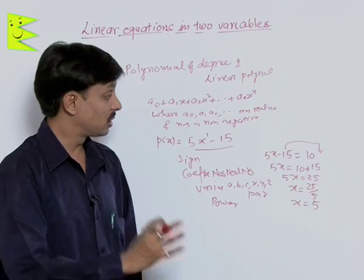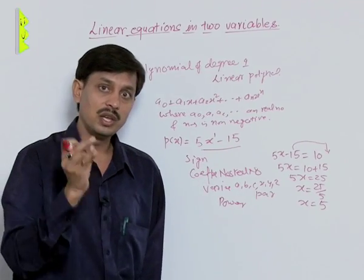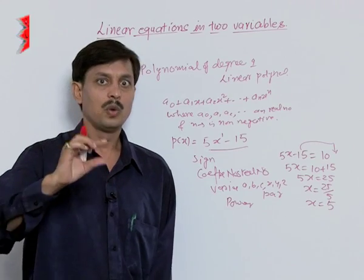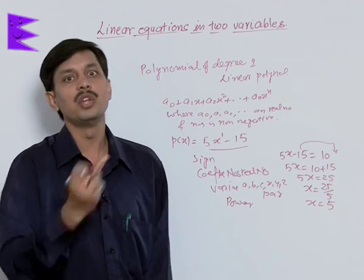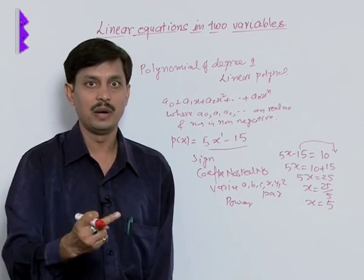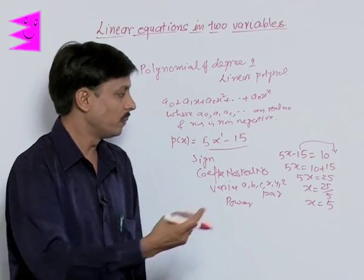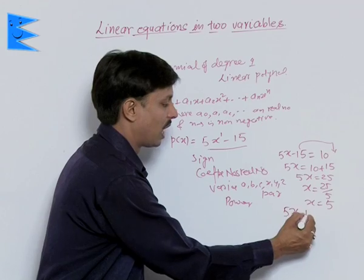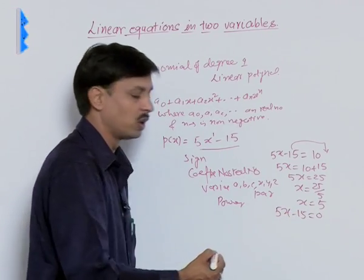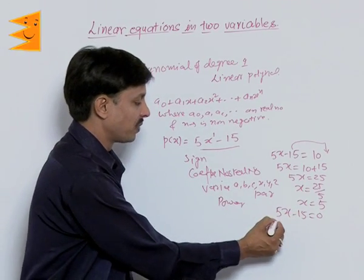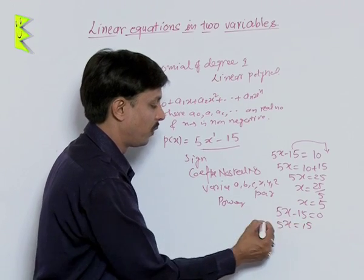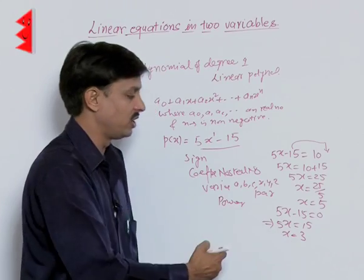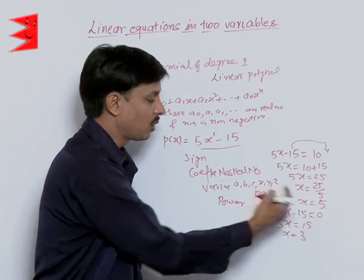So what is the linear equation? Linear equation in one variable is what? When any linear polynomial in one variable equated to some value, you can equate it to 0 also. Suppose you have equated 5x minus 15 is equal to 0, then what you can say, this is 5x is equal to 15 and x is equal to 3. So value gets changed with the equality.